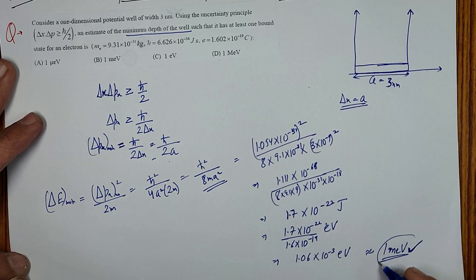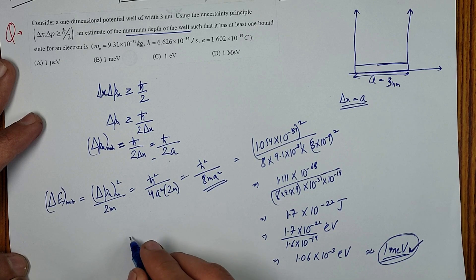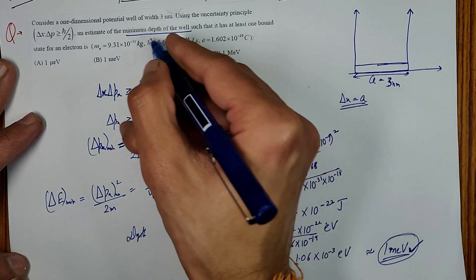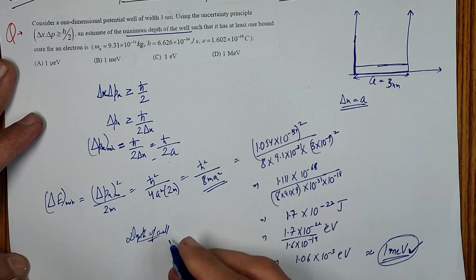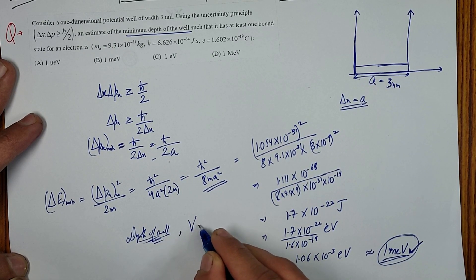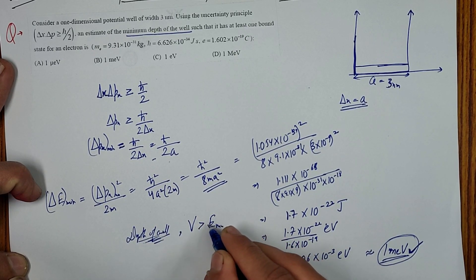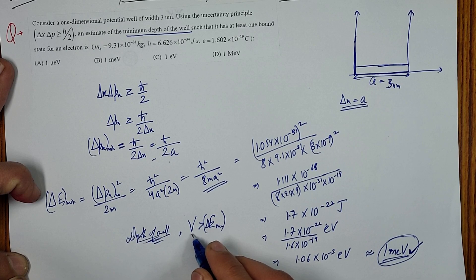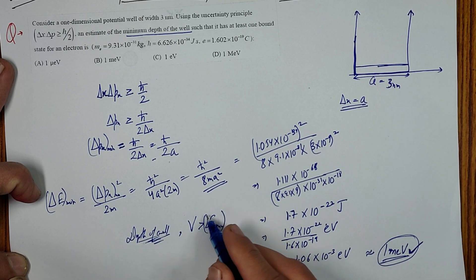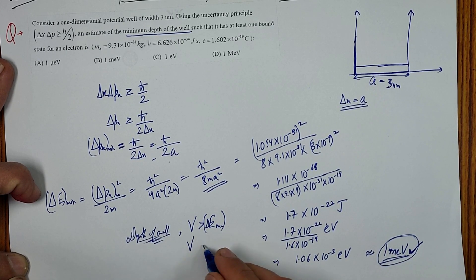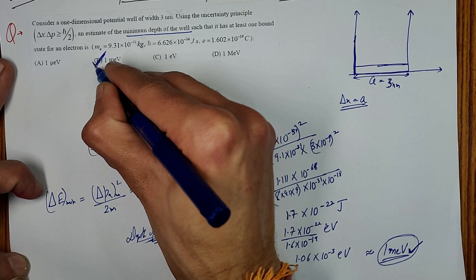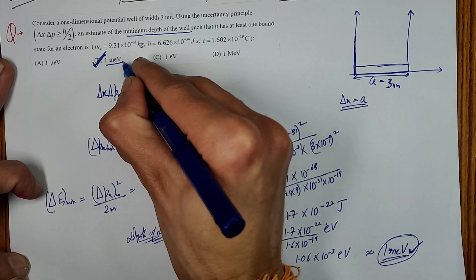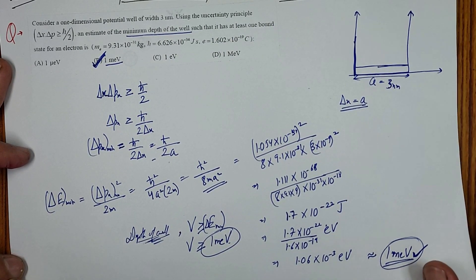So the minimum energy of the electron inside the well is approximately 1 milli electron volt. The minimum depth of the well should be greater than this minimum energy. Therefore, the minimum depth of the well must be greater than 1 meV. Option B is correct. Thank you.